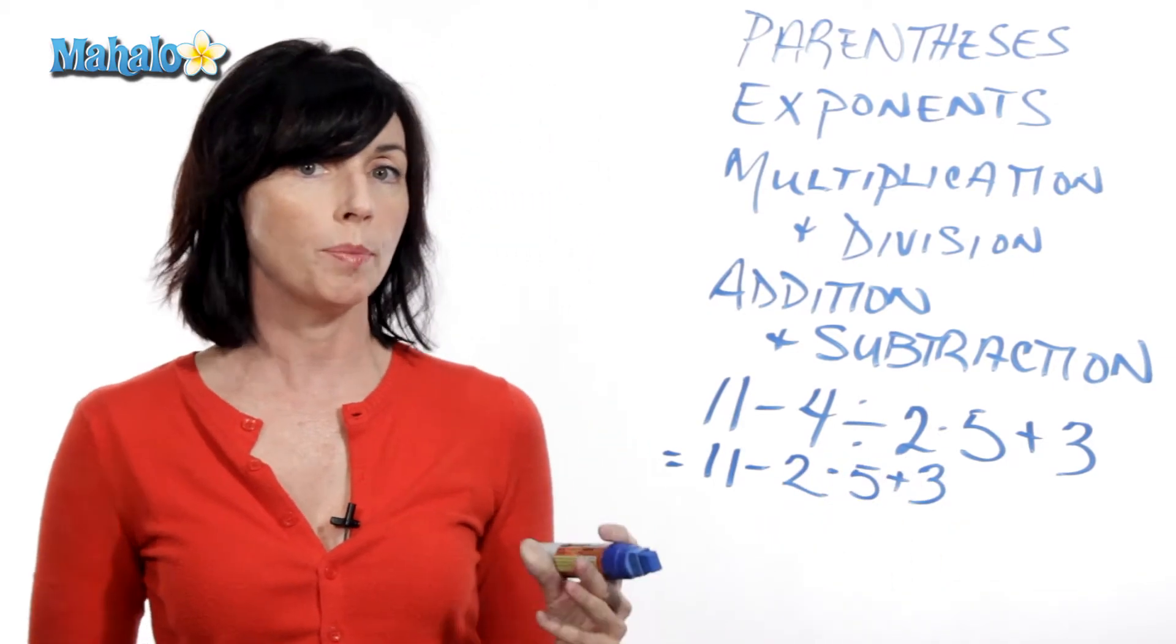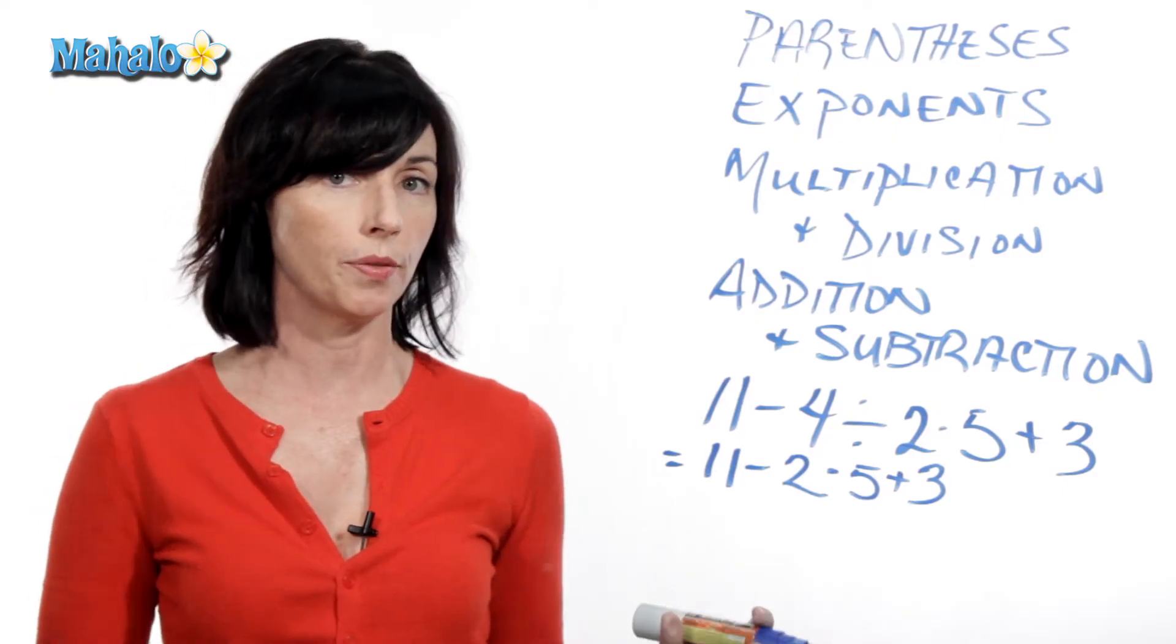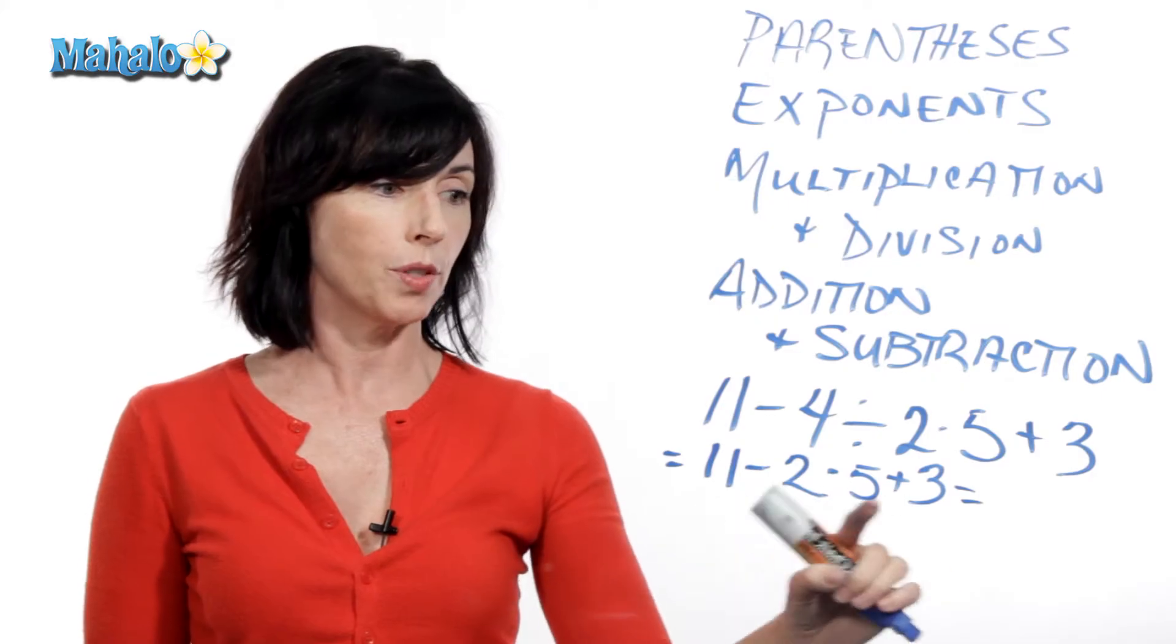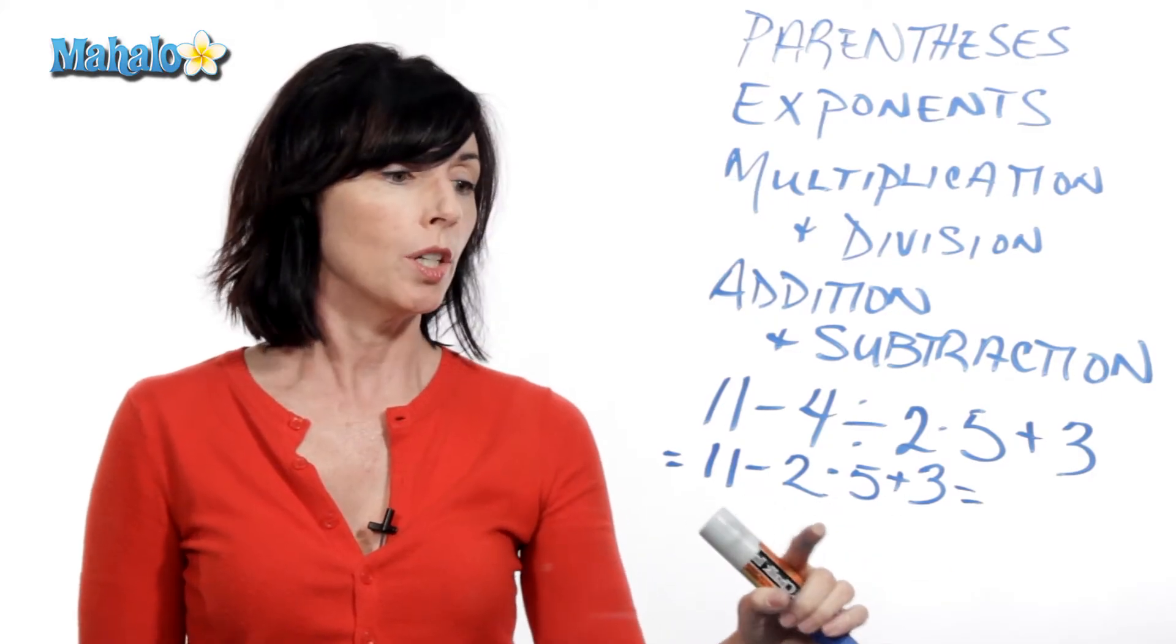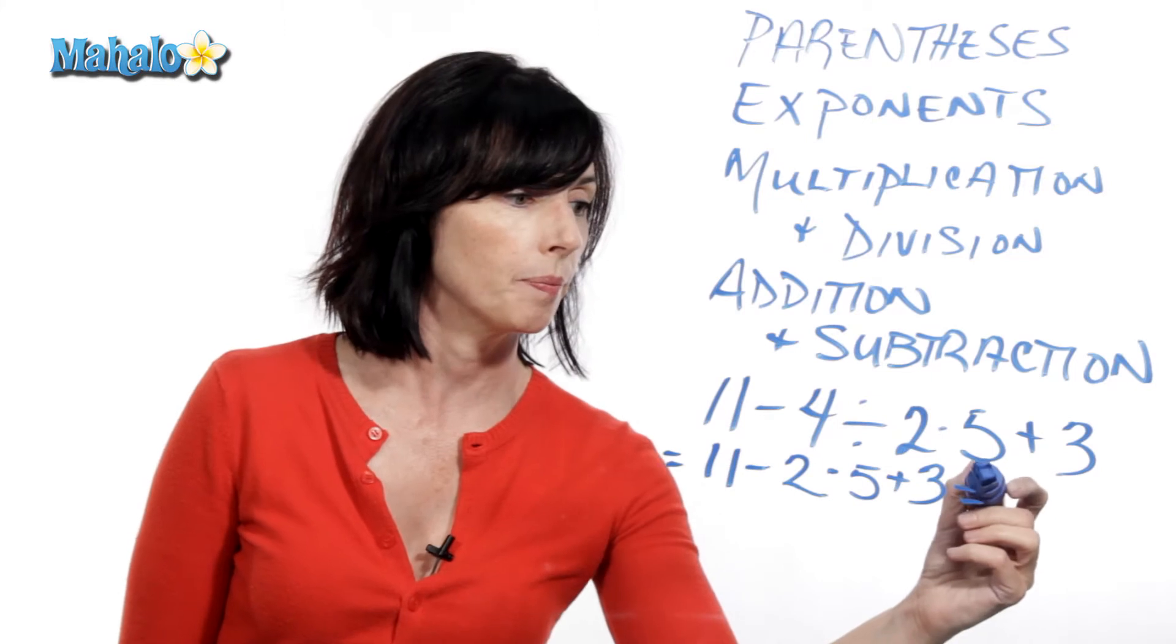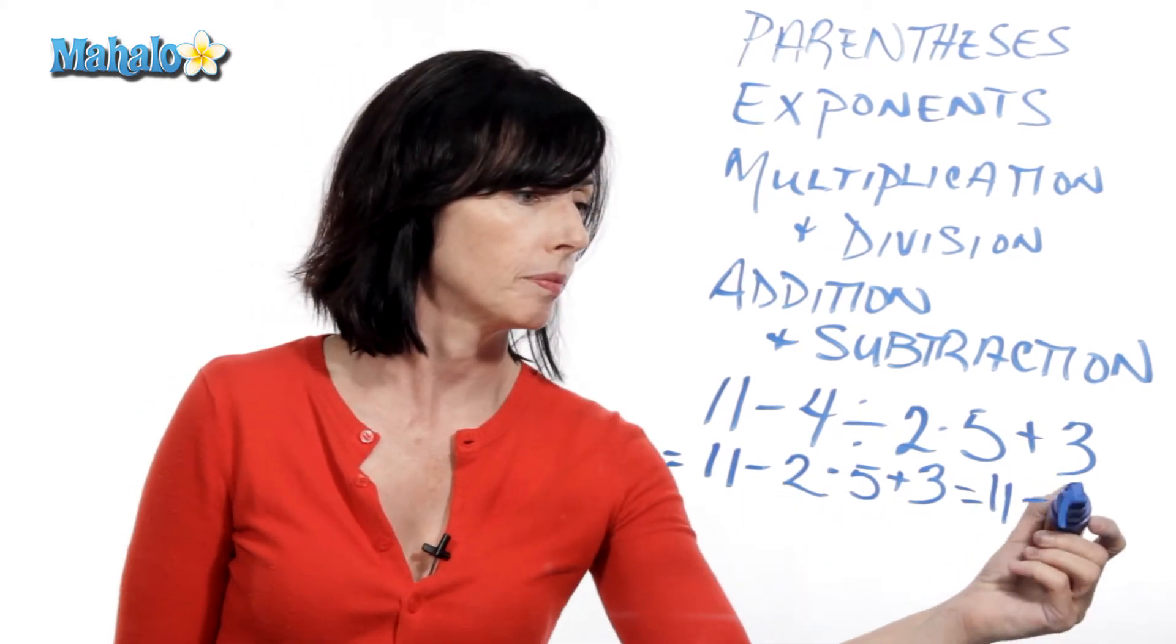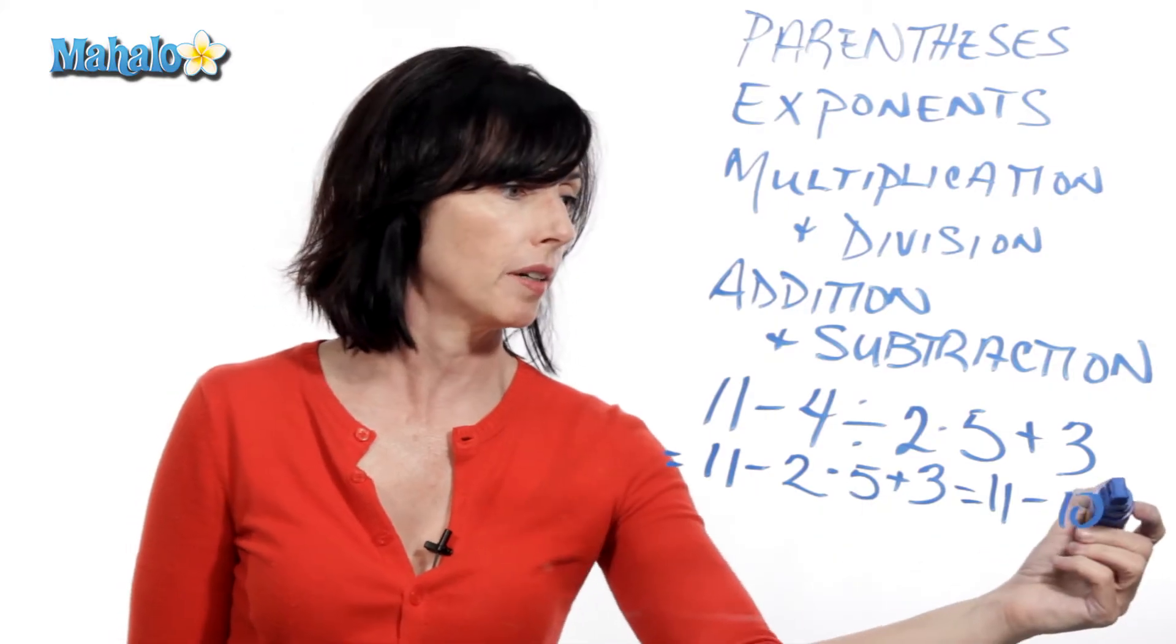Okay. So, now I'm still doing multiplication and division from left to right, so here we go. The next thing I have left to right is this multiplication here. So this becomes 11 minus, 2 times 5 is 10. And then I still have my plus 3 here at the end.